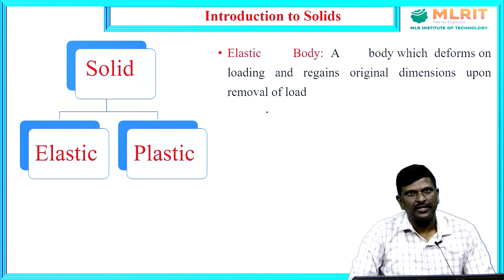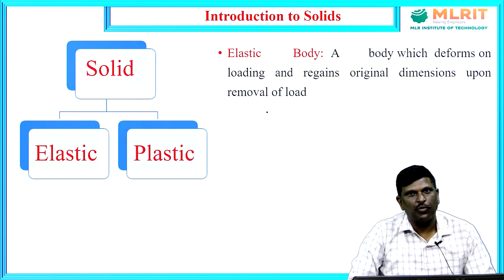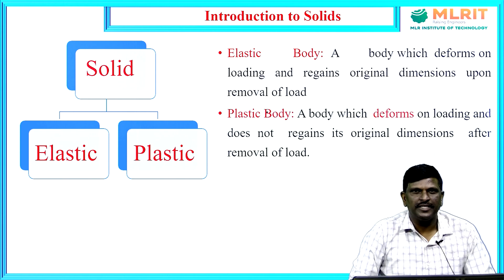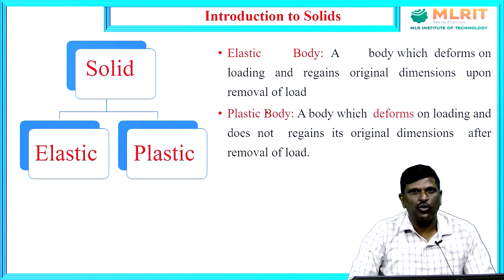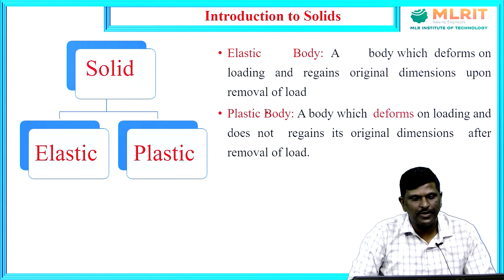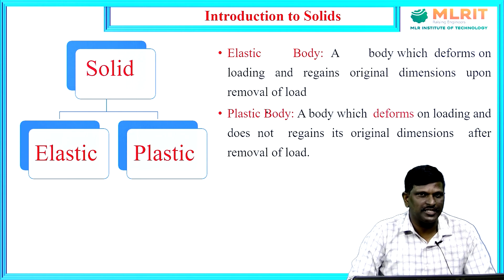The elastic body is a body in which the deformation will occur due to the application of load and on the removal of load, the body will regain its original shape and dimensions. The plastic body is a body in which the deformations occurred due to the load are permanent — the body will not regain its original shape and dimensions after removal of load. Both elastic and plastic materials will undergo deformation.